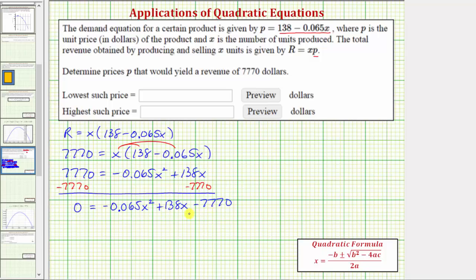We're not going to be able to factor this, so to solve this quadratic equation we'll be using the quadratic formula shown here for review. Where a is the coefficient of the x squared term, so a equals negative 0.065. b is equal to the coefficient of x, which is 138. And c is the constant term, which is negative 7,770. Now we'll substitute a, b, and c into the quadratic formula.